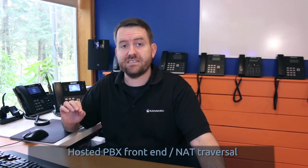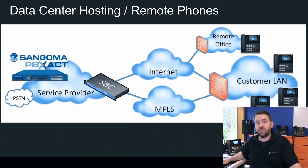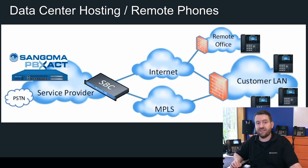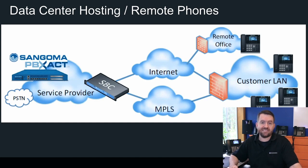Another use case for Sangoma SBCs is for hosted PBX systems. When your PBX is hosted in a data center, it is even more susceptible to security and NAT issues. Having an SBC in front of your hosted PBX allows for all of the same security features mentioned above, plus the ability to do far-end NAT traversal by having a WAN IP address on the SBC itself. This also allows for inbound and outbound call control and control over the DNS registration methods, so you could potentially make changes to the PBX on the inside — such as replacing the PBX entirely — while maintaining the registration of all your remote users and offices in the SBC. For remote phones, the SBC can handle TLS and SRTP encryption and offload that function from the PBX.